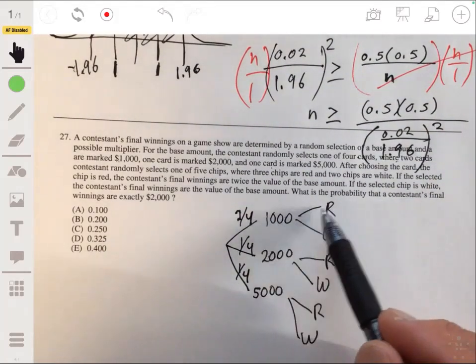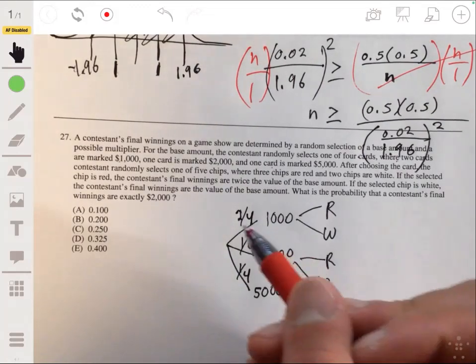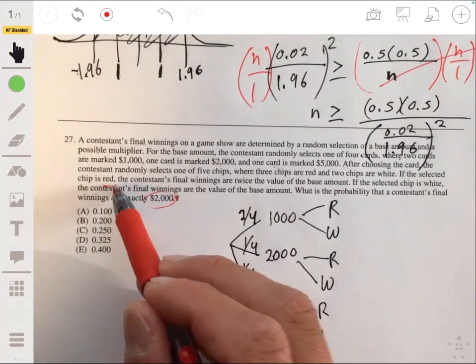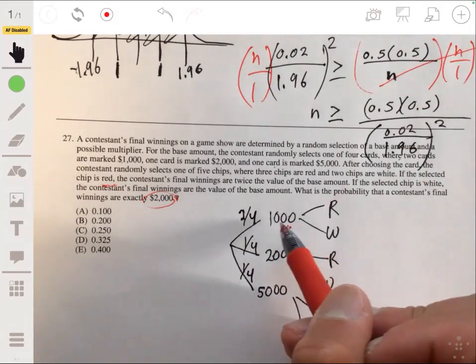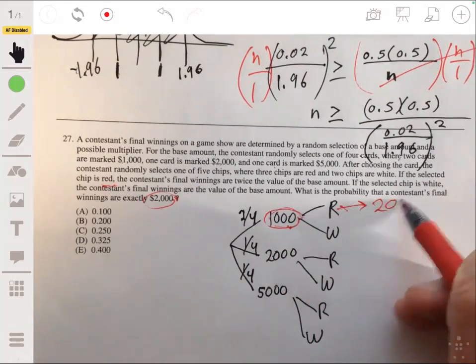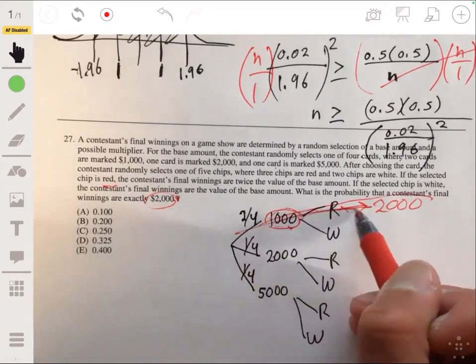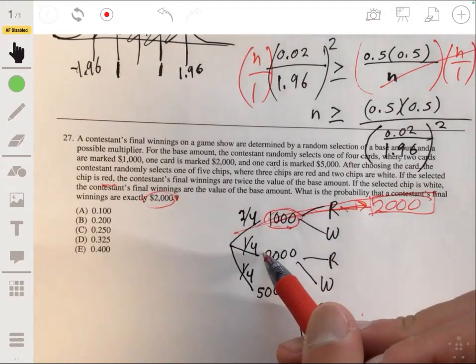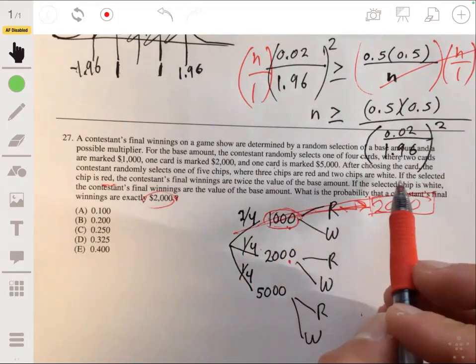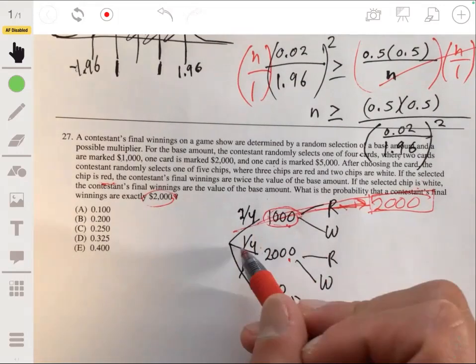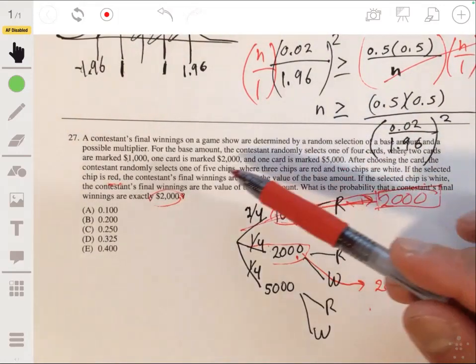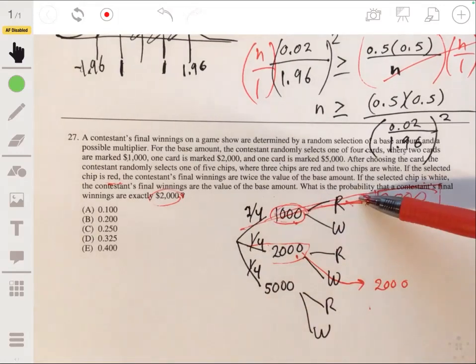Now, you want to see which of these pathways leads to you having $2000 exactly. So if you select a red chip, you get twice your initial amount. So if we get $1000 and we double it with the red, that leads to us having $2000. So you want to find the probability of this pathway. And the other way you can get $2000 is if you get $2000 from the card, and then select the white chip because the white chip just keeps it the same. So you can also have this possibility.